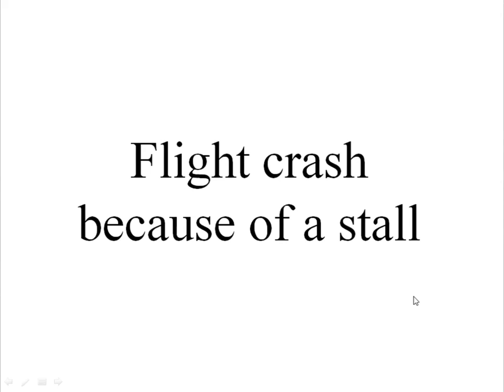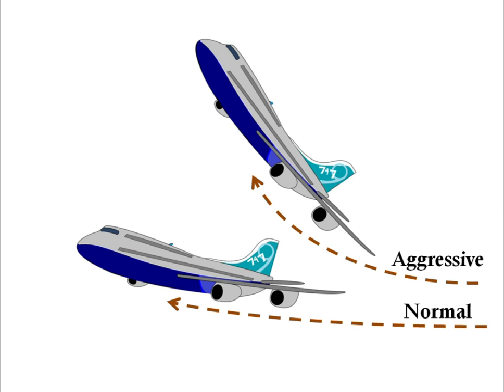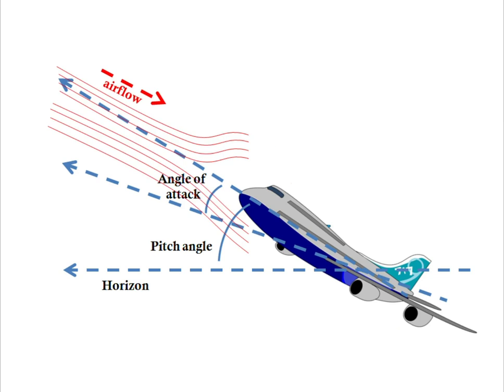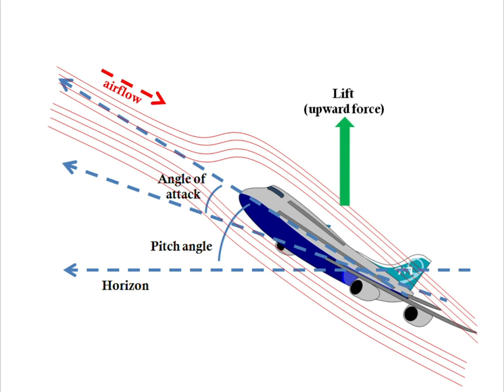What you just saw is a flight crash because of a stall. What appears to have happened is that the airplane tried to gain altitude at a faster rate than normal. In a typical climb, the flight pitches up to increase the angle of attack which forces the surrounding air to create lift.